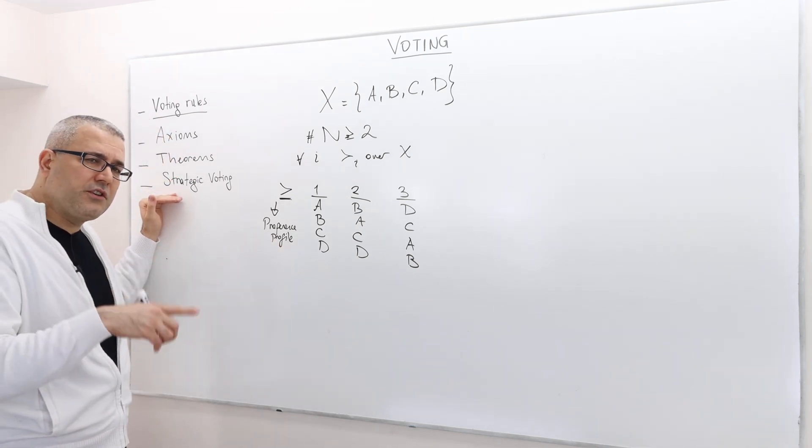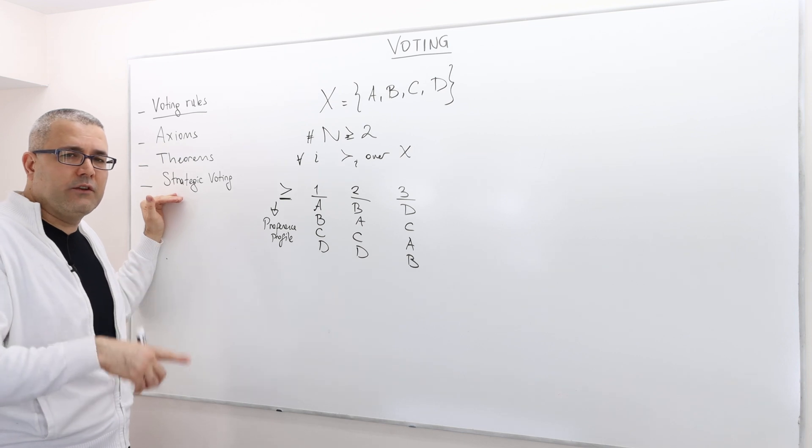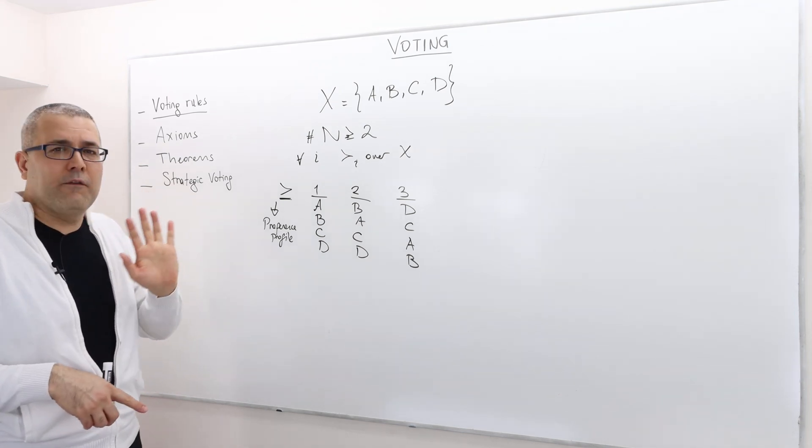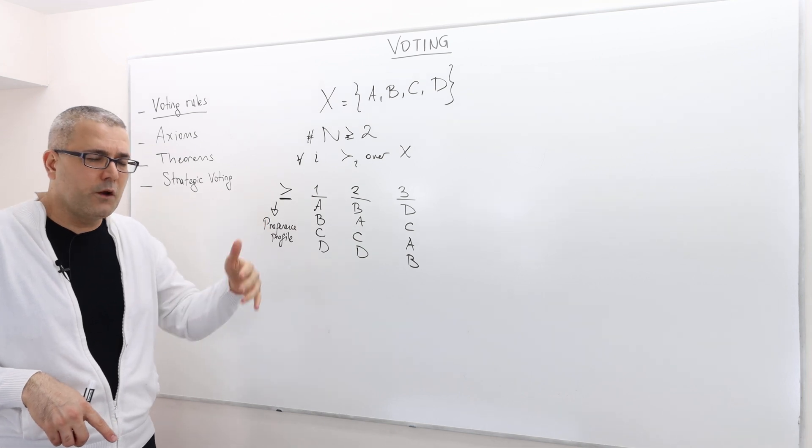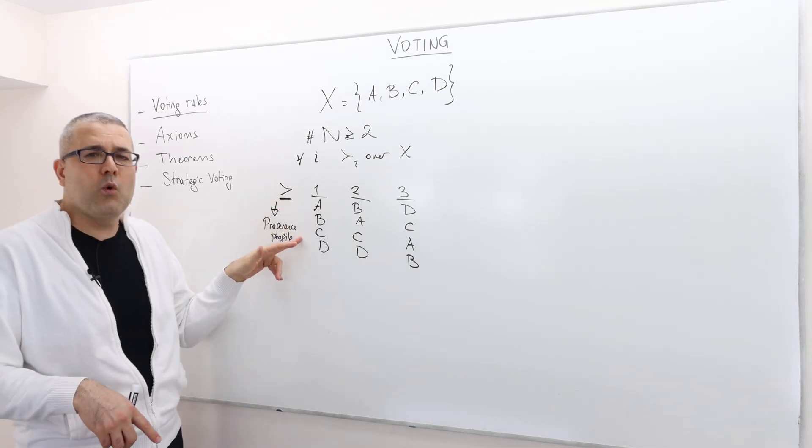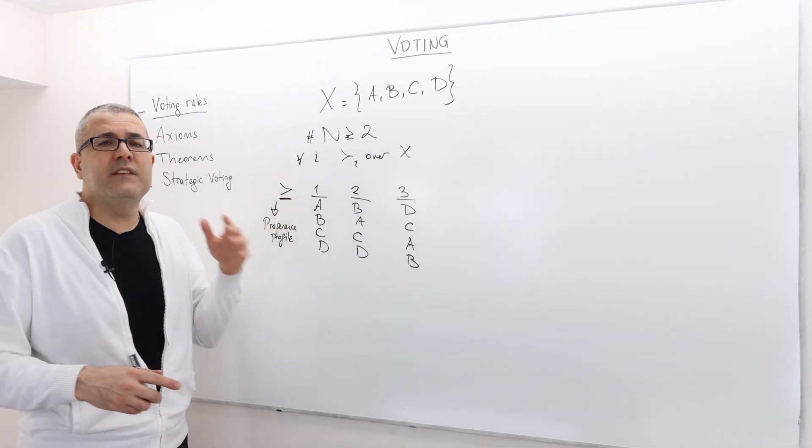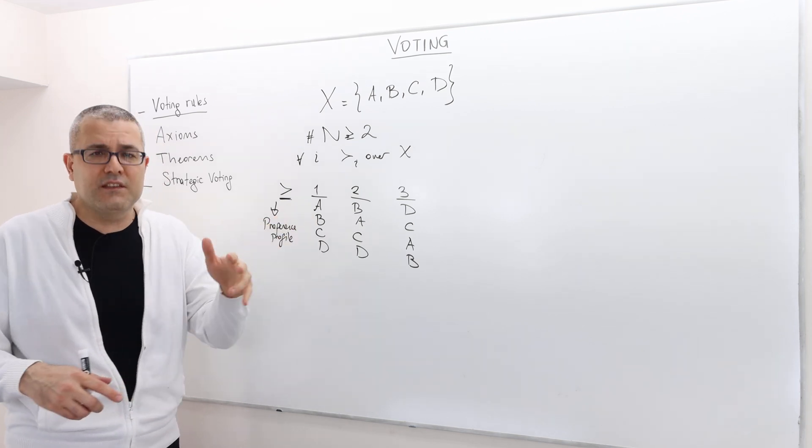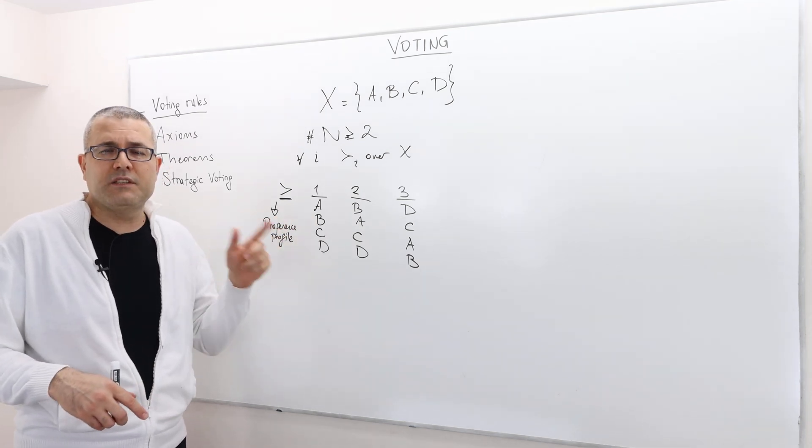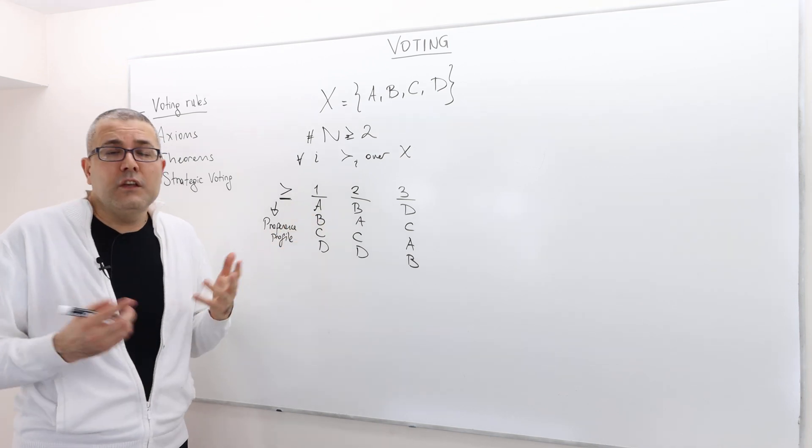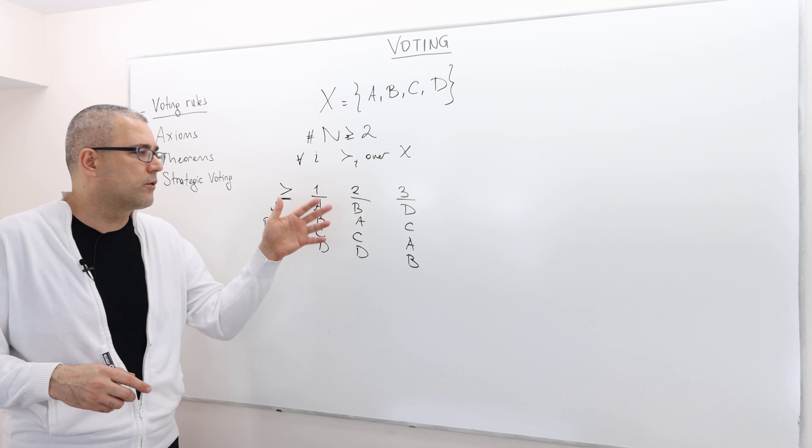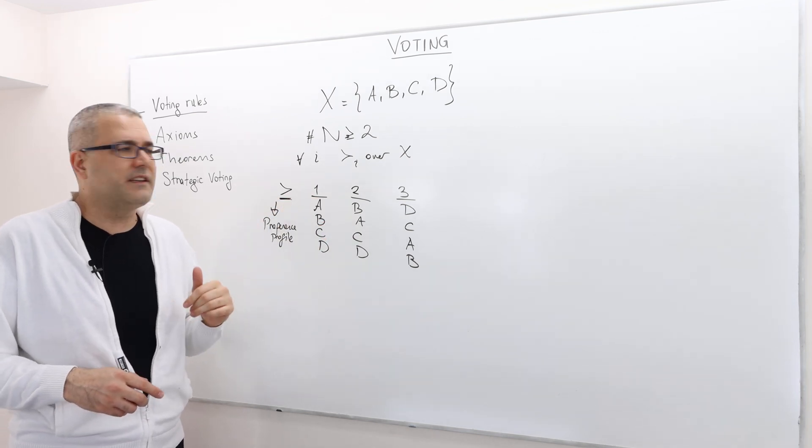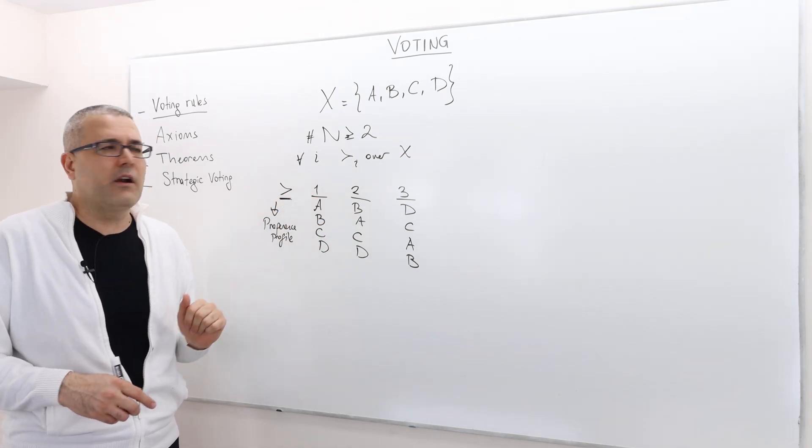Again, I am going to talk about strategic voting towards the end of this chapter, but for now we assume that each voter votes truthfully. Agent one believes that A is the best candidate, B is the second best, then C and then D. However, agent two has a different opinion and ranks candidate B over candidate A, then C and then D.